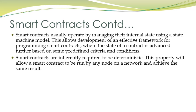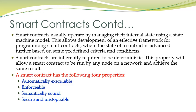Smart contracts are required to be deterministic: if we run the smart contract program on different machines, all machines should produce the same result. The smart contract enforces and verifies conditions; if conditions are met, it allows the transaction. A smart contract has four properties: it should be automatically executable — every node has this smart contract program which executes automatically and verifies conditions; it should be enforceable, semantically sound, secured, and unstoppable.